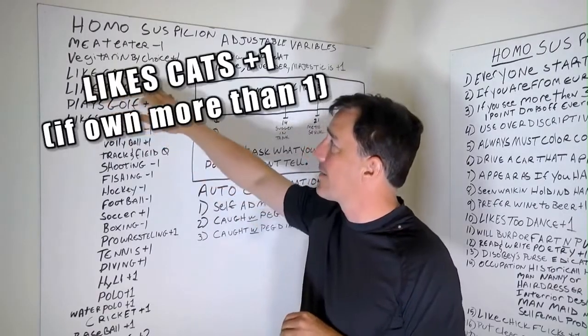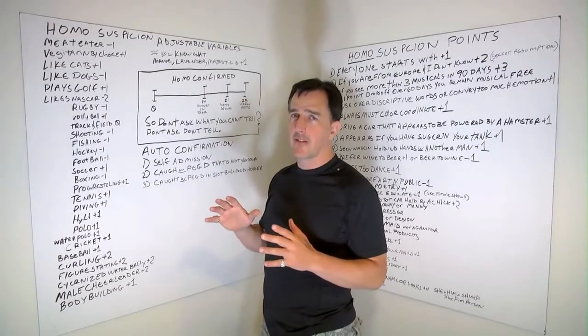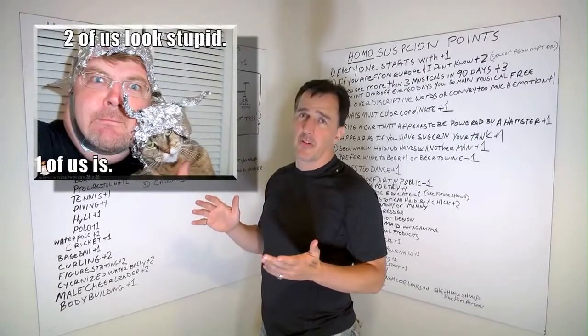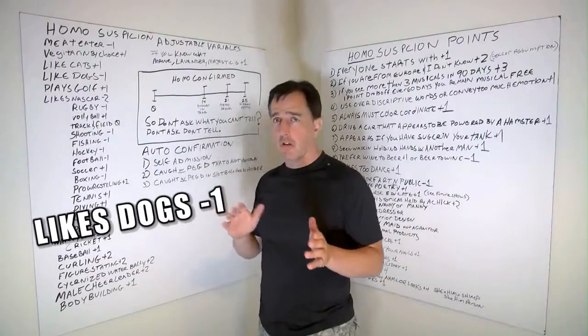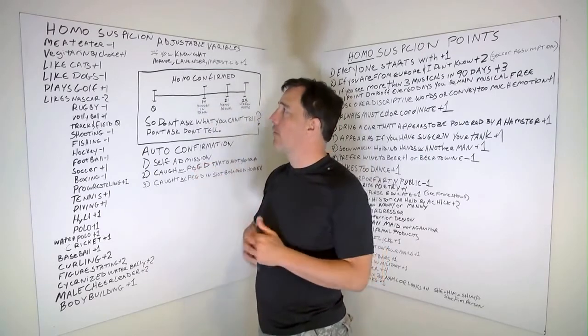Okay, now if you like cats, okay, you're allowed one. If you go over that, you have like four or five cats or even, you're going to get a point. If you like dogs, one dog, whatever. If you like one or five or whatever, any dog, minus one. Okay.